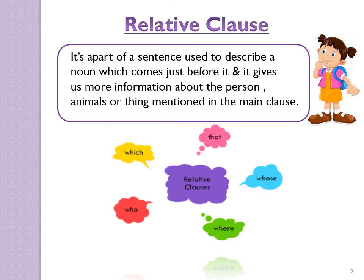A relative clause is a part of a sentence which doesn't make sense on its own, because it doesn't contain the main verb. It is used to describe a noun which comes just before it, and it gives us more information about the person, animals, or thing mentioned in the main clause.